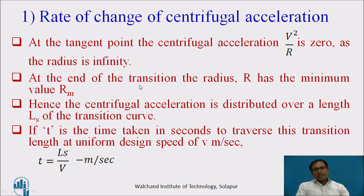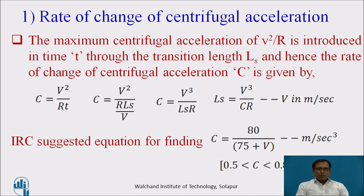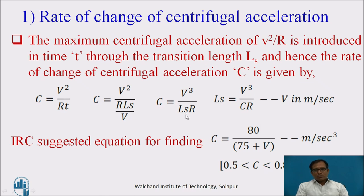At the end of the transition, the radius R has the minimum value R_m, and the centrifugal acceleration is distributed over length L_s, the length of the transition curve. If t is the time taken to travel L_s, then t = L_s / v, where v is in meters per second. The maximum centrifugal acceleration v² / R is introduced in time t, so the rate of change of centrifugal acceleration c = v² / (R·t). Substituting t = L_s / v gives c = v³ / (L_s · R). Therefore, L_s = v³ / (C·R), where v is in meters per second.